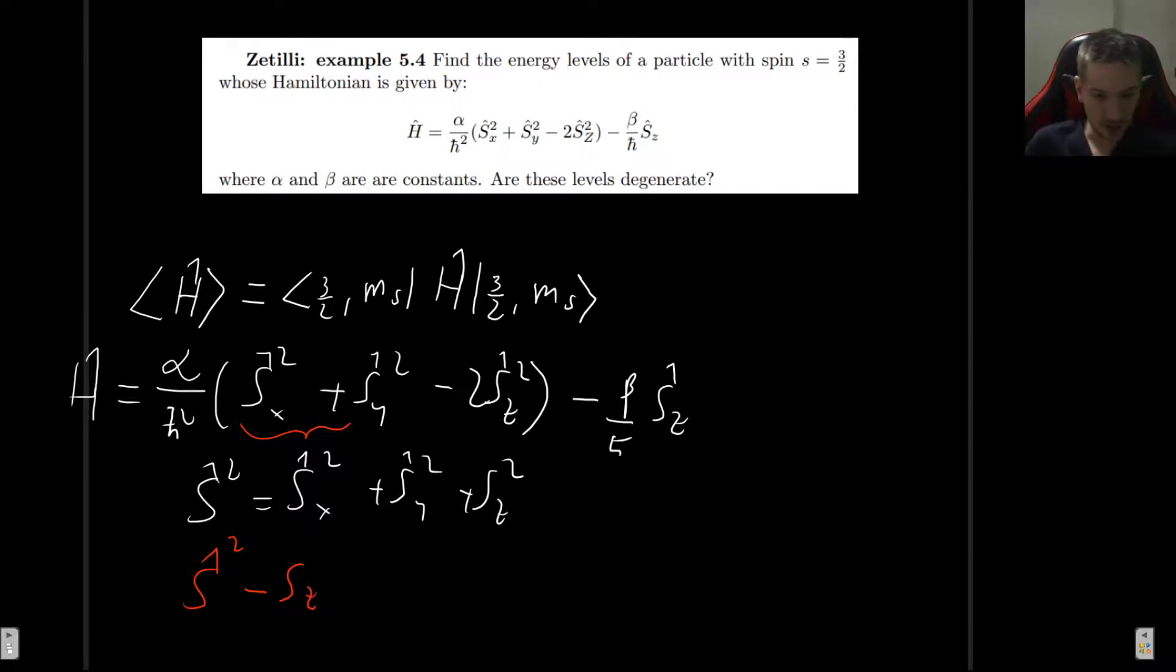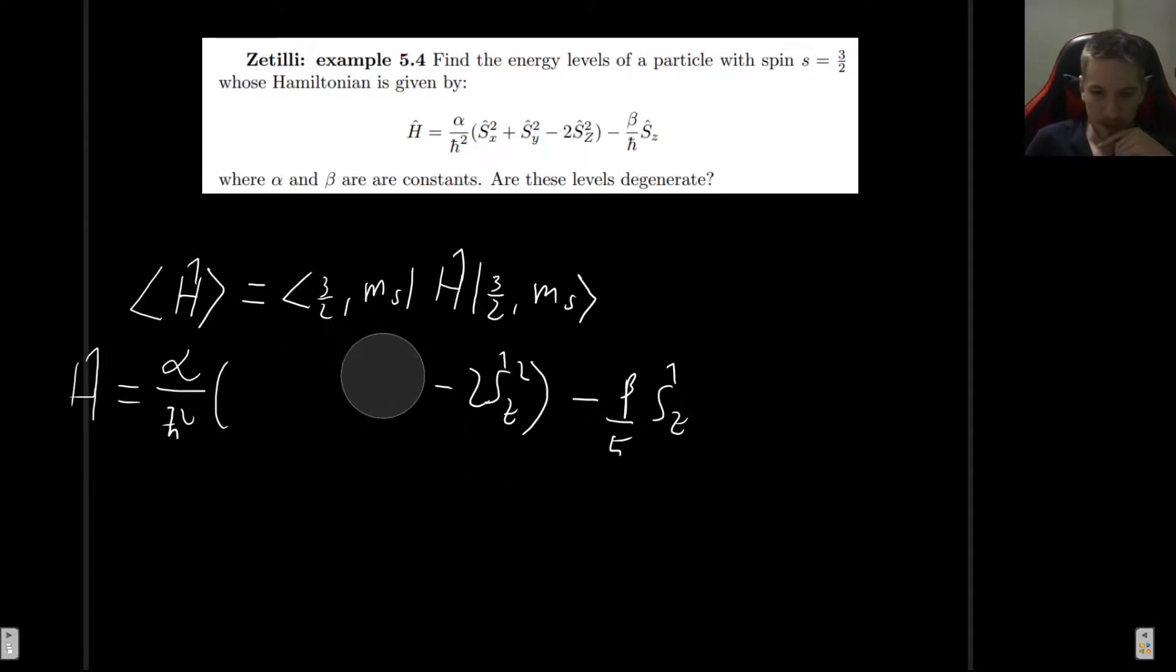write this differently in terms of operators that we do know. So the way to write this is simply to take s squared minus s_z squared. Because that's the same as s_x squared plus s_y squared. So that's exactly what we're going to do here. So that sum is simply s squared minus s_z squared. But we already have 2 s_z squared here. So this is 3 s_z squared. So now we have rewritten the Hamiltonian.